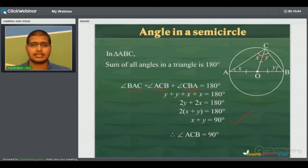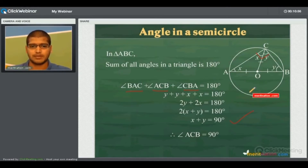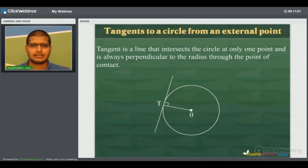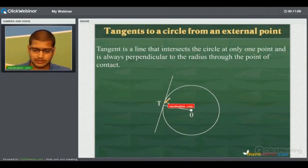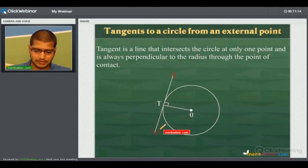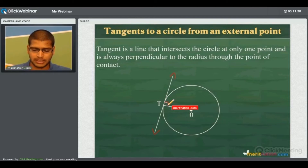Since x plus y is nothing but angle ACB, we get angle ACB equals 90 degrees. Hence, the angle formed in a semicircle is always 90 degrees. Now let us construct the tangents to a circle from an external point. A tangent is a line that intersects the circle at only one point and is always perpendicular to the radius through the point of contact. Here T is the only point on the circle where the tangent touches, and OT is the radius perpendicular to the tangent.